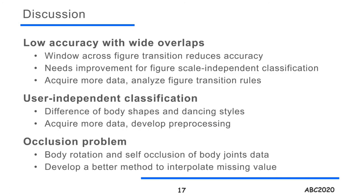Here's the discussion. There are three main problems. The first is low accuracy with wider overlaps — we consider this is because windows across figure transitions reduce accuracy. Therefore, we need to improve our method for figure-scale independent classification and acquire more data to analyze figure transition rules. The second is user-independent classification; it was difficult to handle differences in body shapes and dancing styles, which may be solved with more data and better preprocessing. The third is the occlusion problem — since dancing activities involve body rotation, it was hard to avoid occlusions, so it is important to develop a better method to interpolate missing values or improve the pose estimation method.